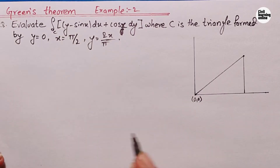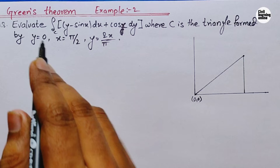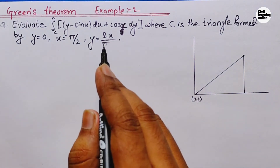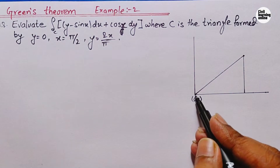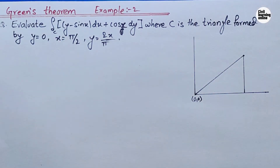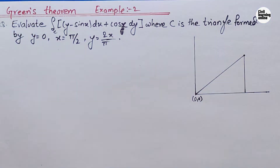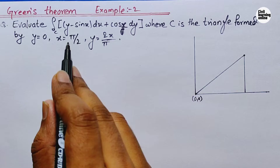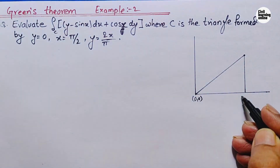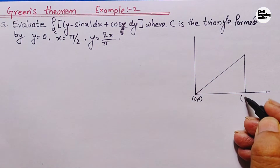We have y equals 0, x equals pi by 2, and y equals 2x upon pi. If the triangle is originated from the origin, then we have both x and y equals to 0. After that, x equals pi by 2, so here it is x equals pi by 2.